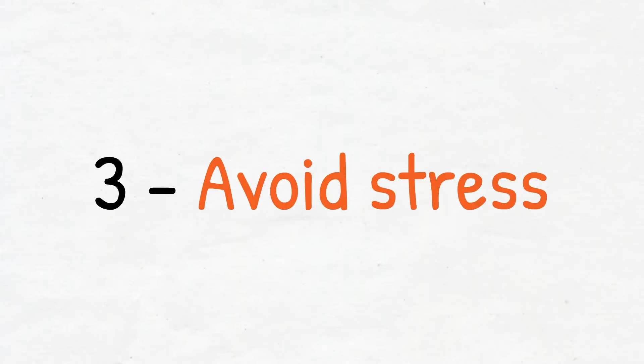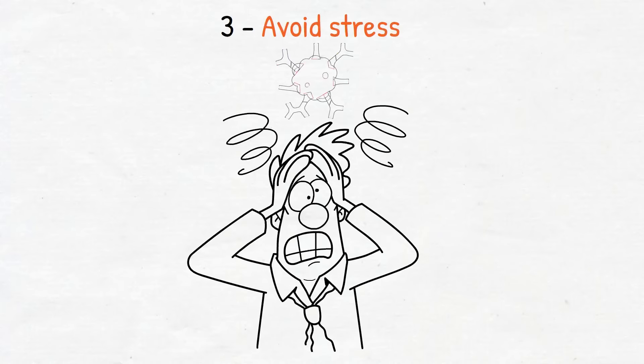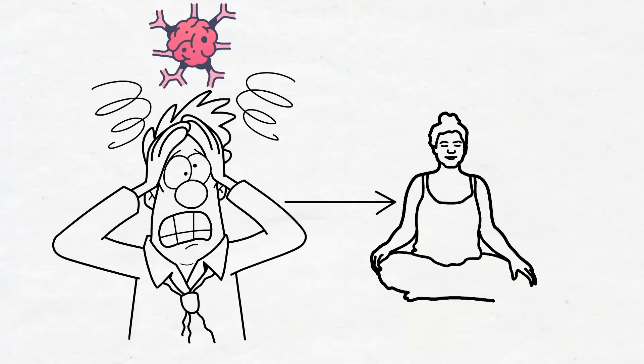Number three, avoid stress. Stress makes you vulnerable to diseases such as cancer by weakening your immune system. Stress can also lead to dementia in old people and difficulties with school in children. Deep breathing exercises and meditation can help you avoid stress.